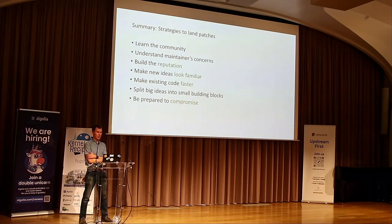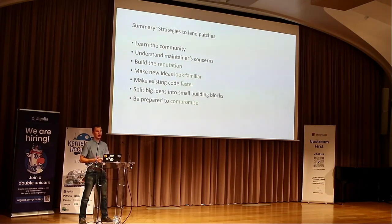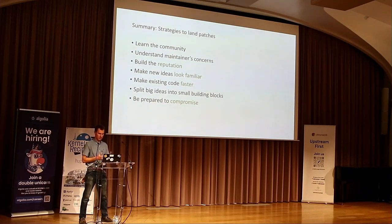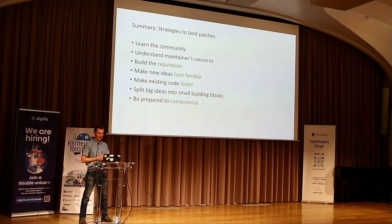To summarize the strategies that may be useful to folks who want to implement the next crazy feature in the kernel or any other community: start by learning the community — kernel and LLVM are very different, maintainers care about different things. You can't just send patches — start by building reputation, start with patches in areas where key people work so they understand you may be a capable programmer. Then the main things I used: look familiar, make existing code faster, and compromise. These are the three main strategies that worked in the BPF case.